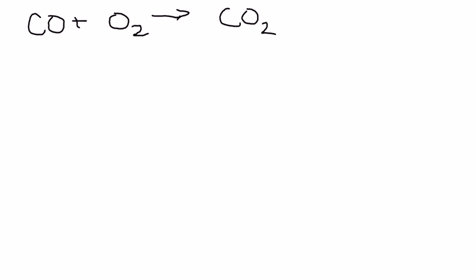Now, we're also going to want to make sure this is balanced. Right now we have one carbon on each side, but three oxygens on the left and two on the right. So to balance that, it's really going to be pretty simple. We're going to put a 2 in those two places. We've got a balanced equation now.